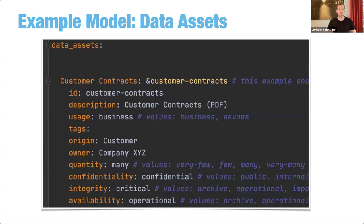Here we see an example data asset modeled in YAML in the threat model file — some customer contracts, taken from the example. Each data asset has an ID, an identifier assigned, a little description for the documentation, and the lower three lines — confidentiality, integrity, and availability — where you rate your data asset in terms of these protection goals.